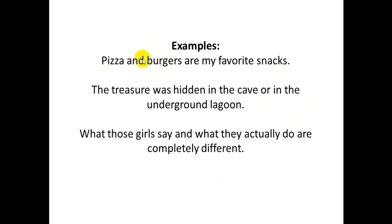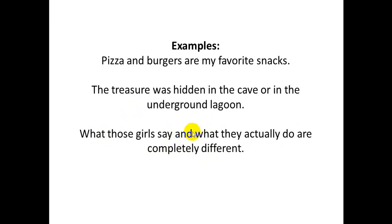Example: 'Pizza and burger are my favorite snacks.' Here 'and' is the coordinating conjunction joining pizza and burger. Another example: 'The treasure was hidden in the cave or in the underground lagoon.' And: 'What those girls say and what they actually do are completely different.' Observe how 'and' functions here as a coordinating conjunction.